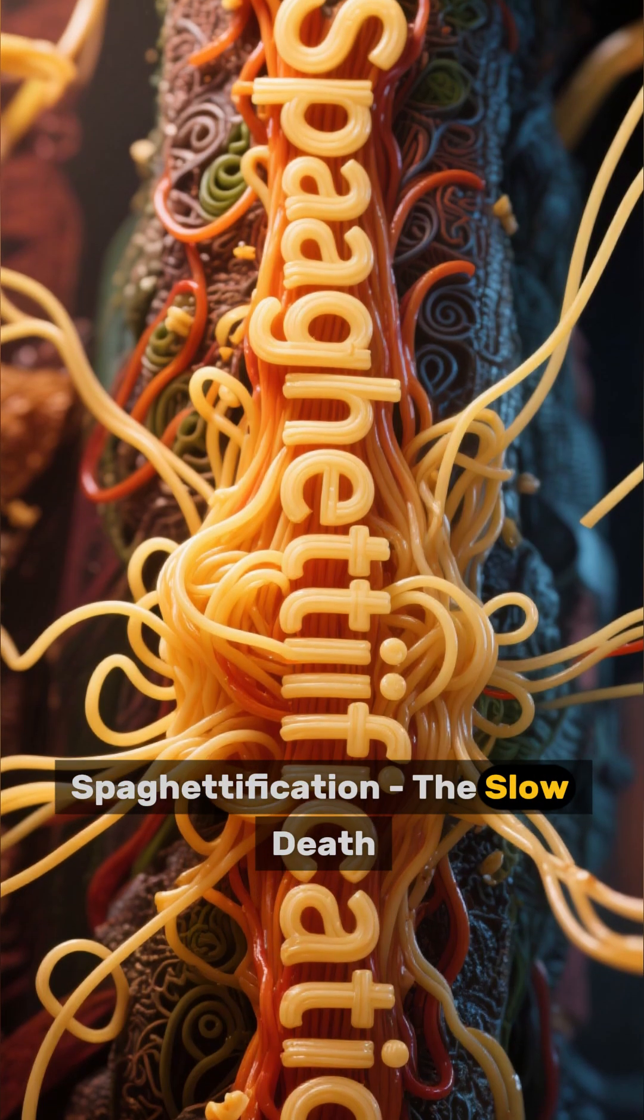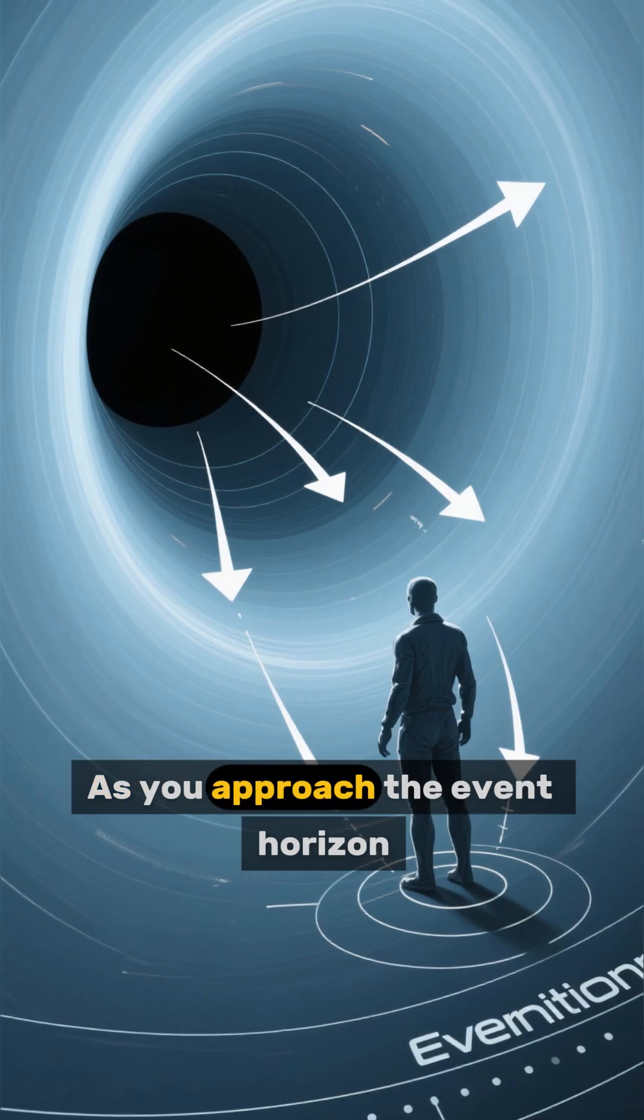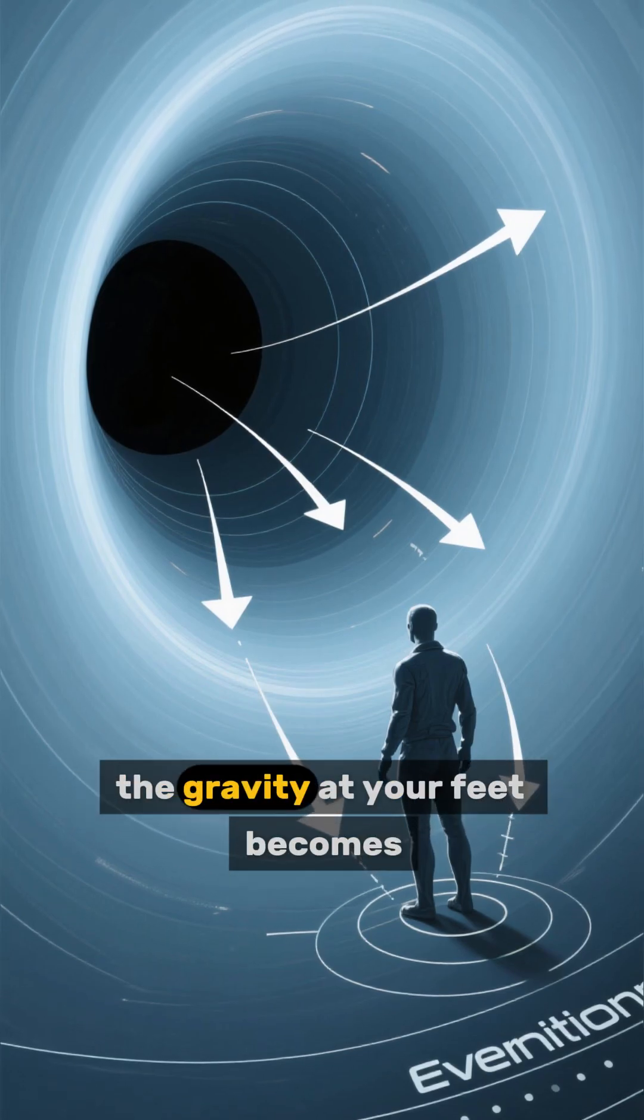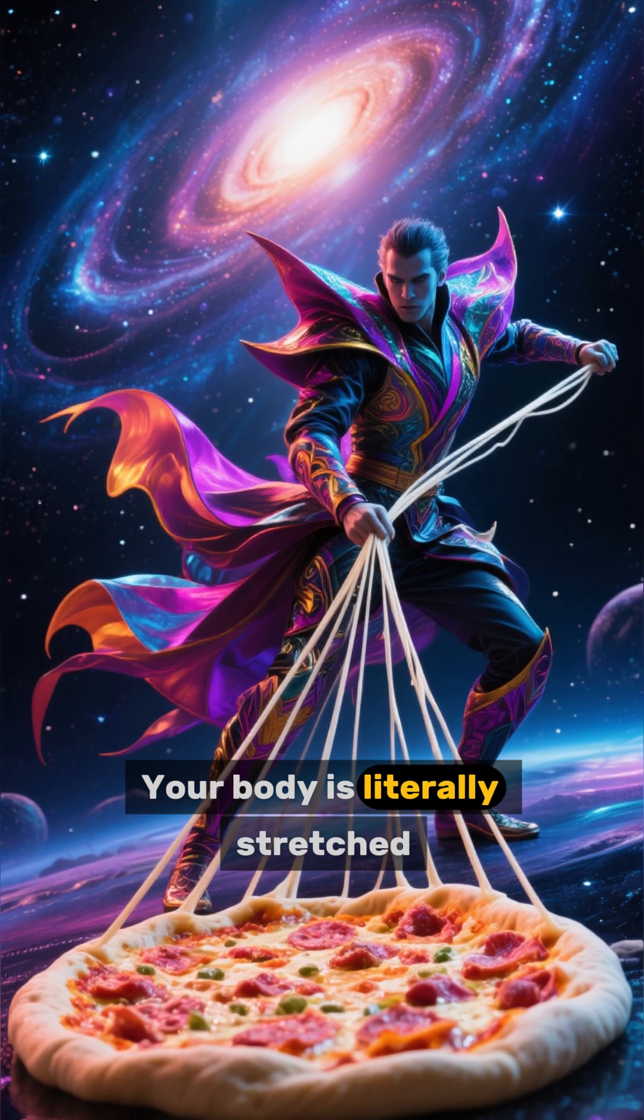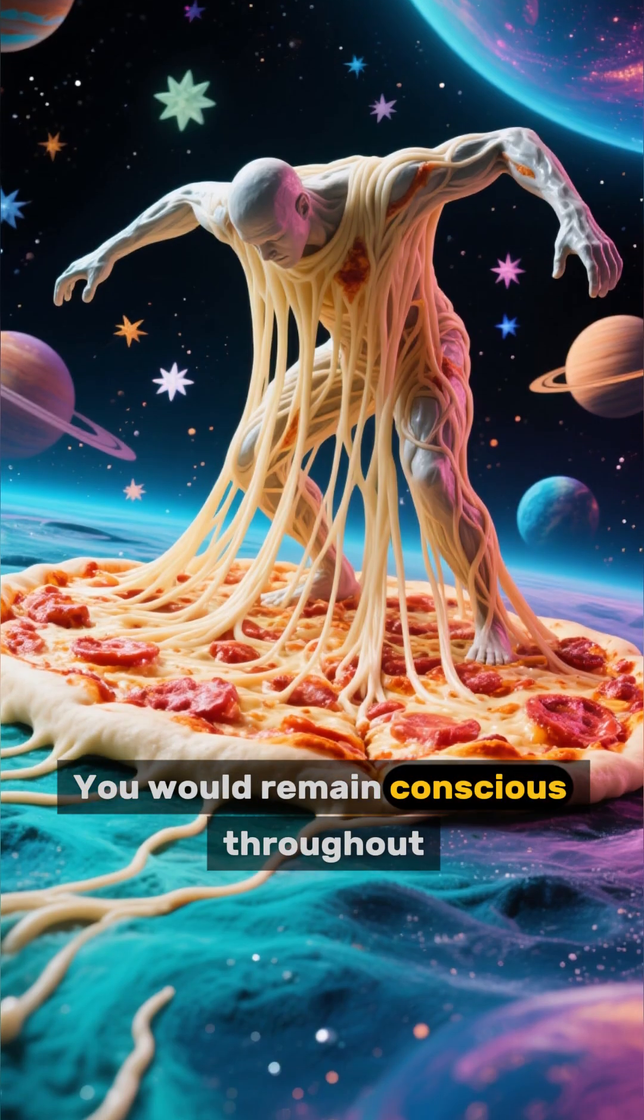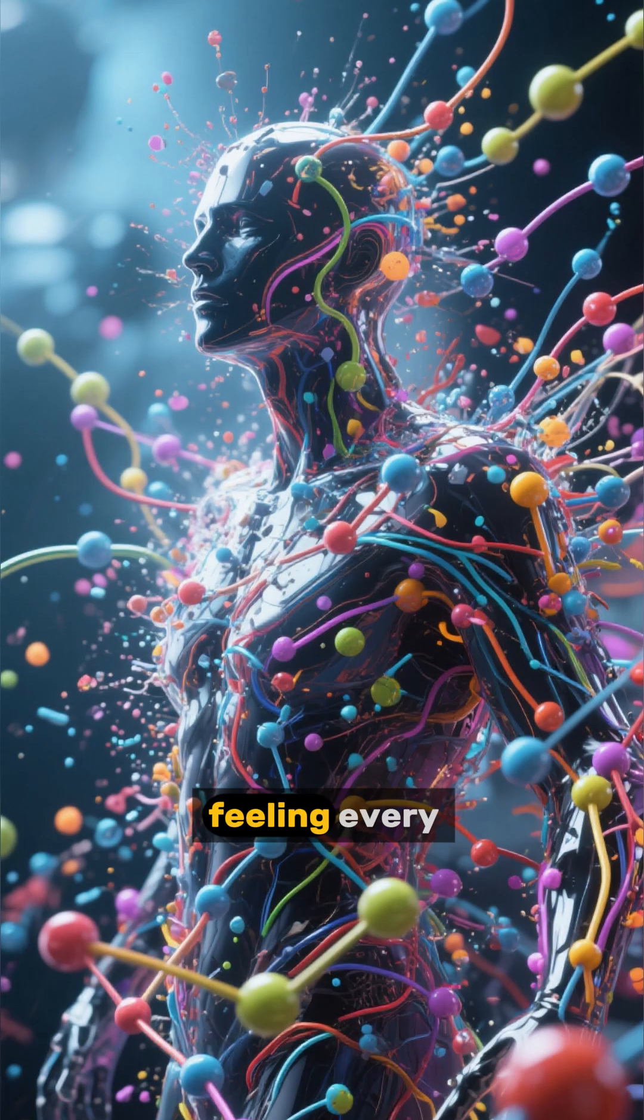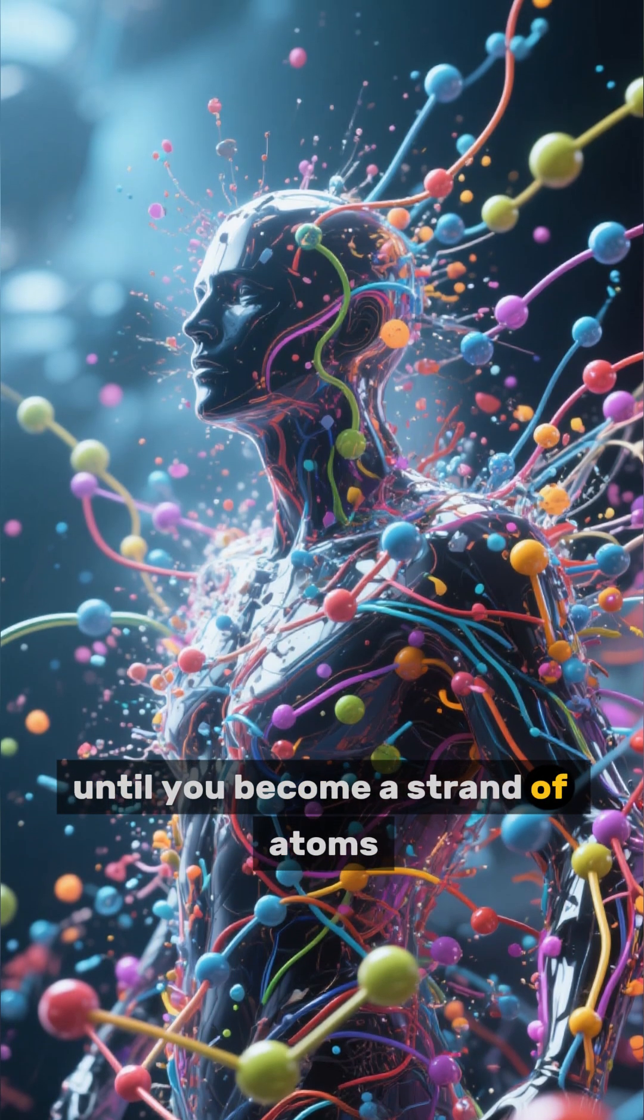Spaghettification, the slow death. Fourth fact: As you approach the event horizon, the gravity at your feet becomes exponentially greater than at your head. Your body is literally stretched like cosmic pizza dough. You would remain conscious throughout the entire process, feeling every fiber being pulled apart until you become a strand of atoms.